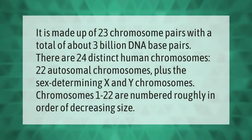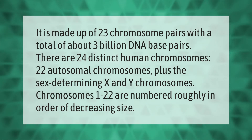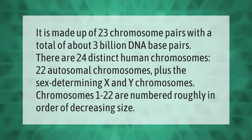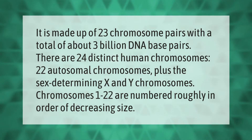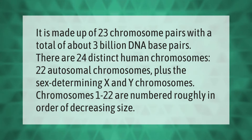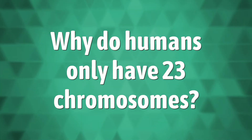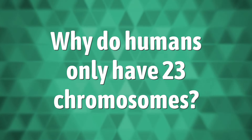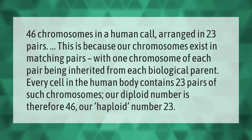The karyotype is made up of 23 chromosome pairs with a total of about 3 billion DNA base pairs. There are 24 distinct human chromosomes: 22 autosomal chromosomes plus the sex-determining X and Y chromosomes. Chromosomes 1 to 22 are numbered roughly in order of decreasing size.